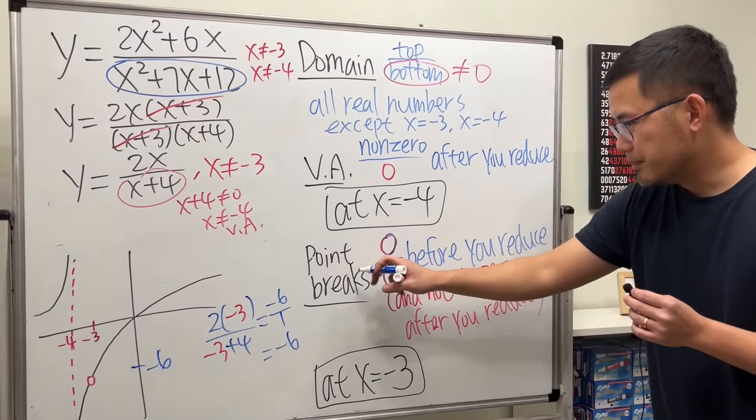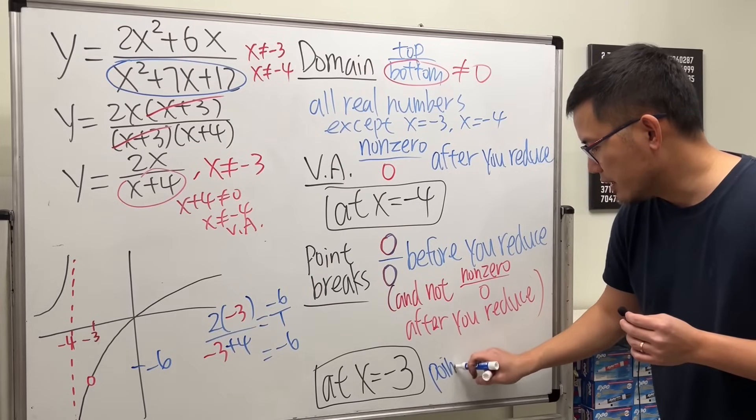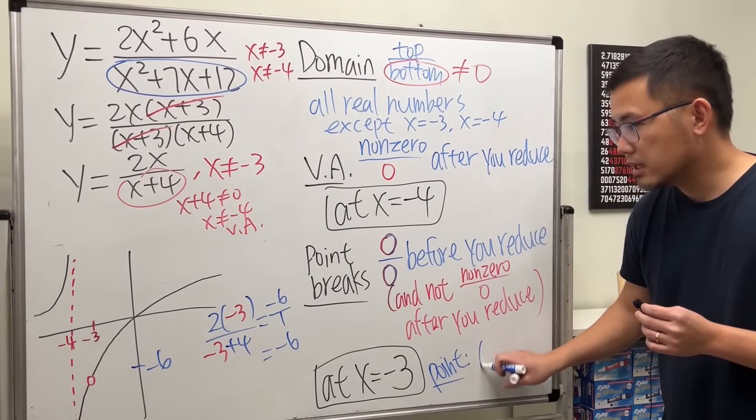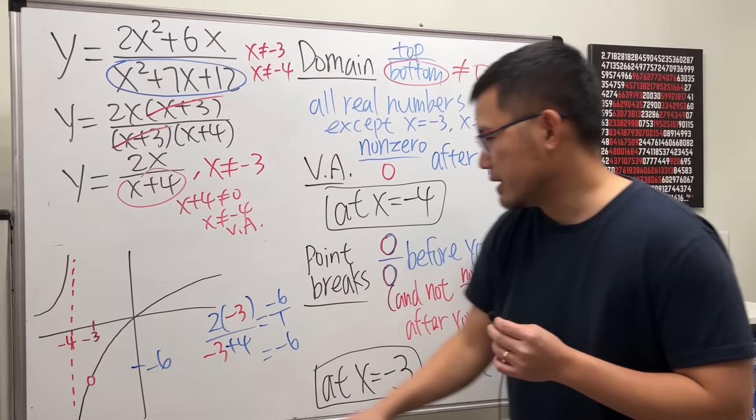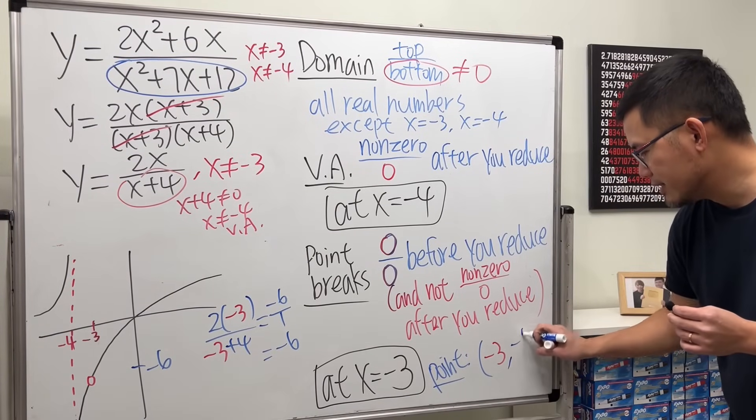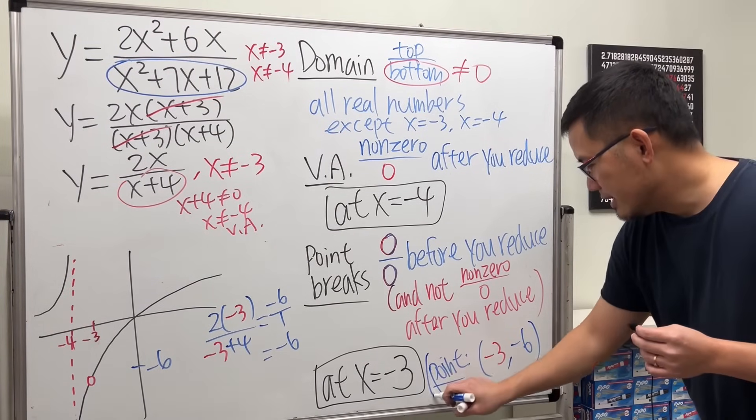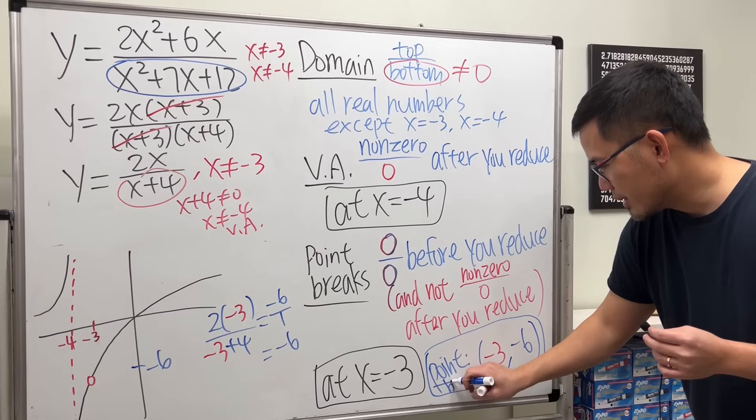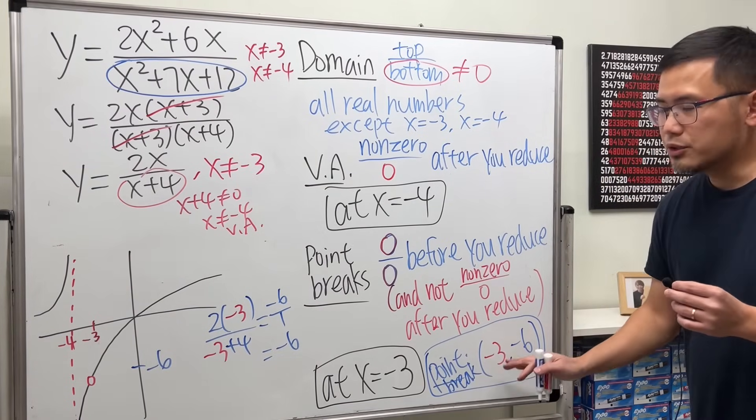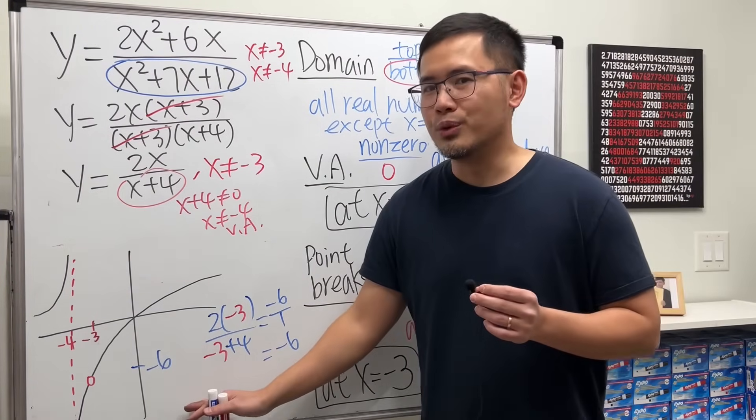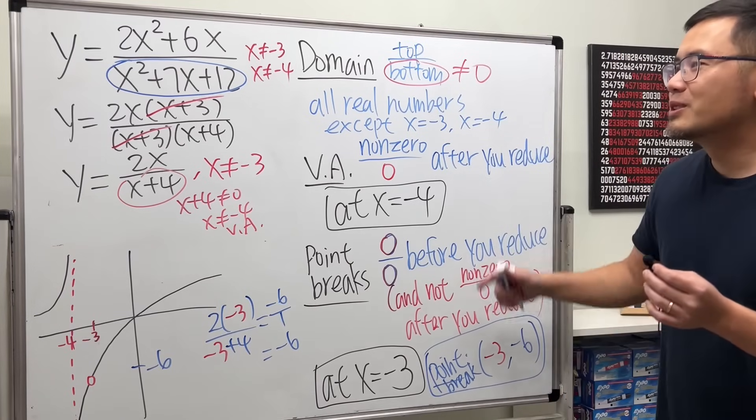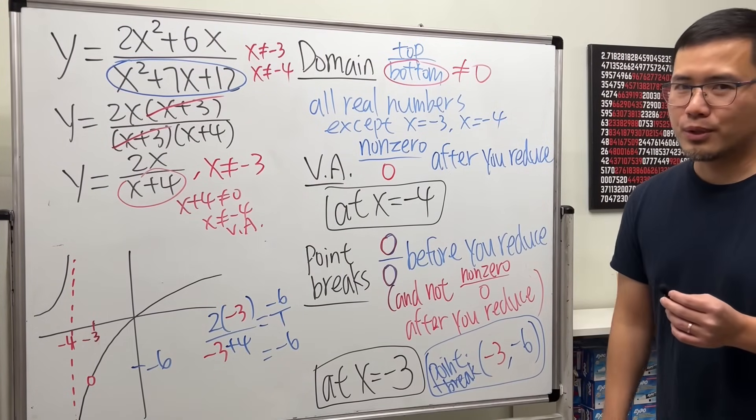So that's negative 6. So in fact, the point break, you can be more specific and say the point is negative 3 comma negative 6. So negative 3 comma negative 6. And this right here, point break. And this is a crucial part when you start calculus. So hopefully this helps. Let me know if you have any other questions.